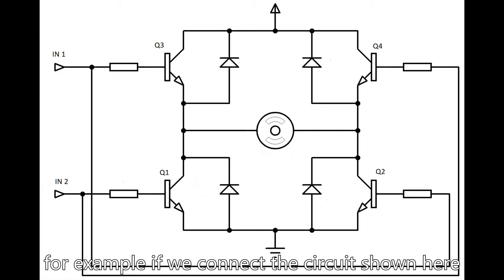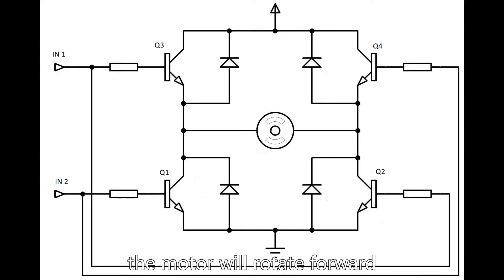For example, if we connect the circuit shown here, when Q1 and Q4 are switched on, the motor will rotate forward. However, if we turn Q2 and Q3 on while Q1 and Q4 off, the motor will have a reverse rotation.